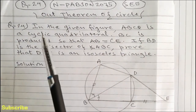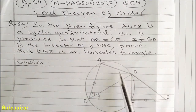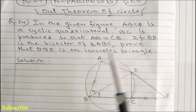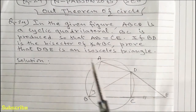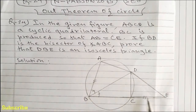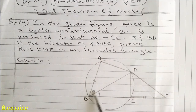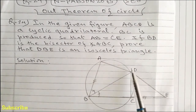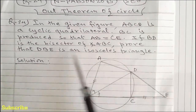Dear students, in question number 24, the question is: In the given figure, ABCD is a cyclic quadrilateral. The side BC is produced to E so that AB is equal to CE. If BD is the bisector of angle ABC, prove that triangle DBE is an isosceles triangle.